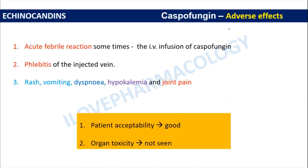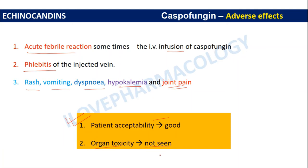Adverse effects of caspofungin include acute febrile reactions following IV infusion, thrombophlebitis of the injected vein, rashes, vomiting, dyspnea, hypokalemia, and joint pain. Patient acceptability with caspofungin is very good, and organ toxicity is not seen compared with amphotericin B, which causes nephrotoxicity.